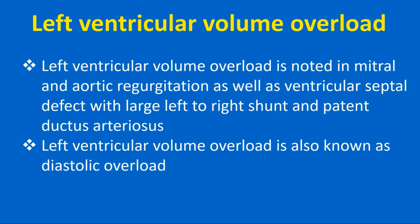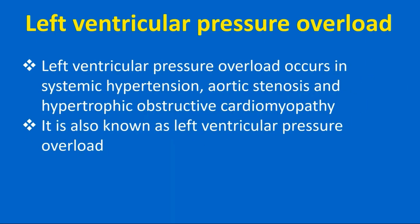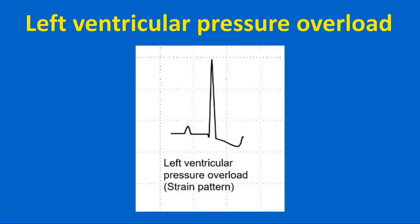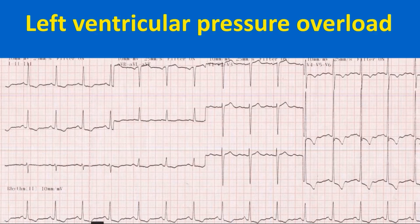Left ventricular volume overload is also known as diastolic overload. Left ventricular pressure overload occurs in systemic hypertension, aortic stenosis, and hypertrophic obstructive cardiomyopathy. It is also known as left ventricular systolic overload. In addition to tall R waves in lateral leads and deep S waves in V1 and V2, there will be down-sloping ST segment depression and T wave inversion — the LVH strain pattern — seen in severe aortic stenosis.